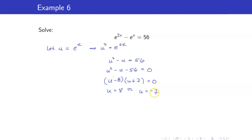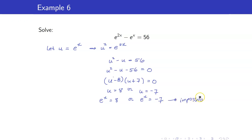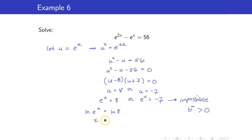Remember that we are solving for x, not u, so do not forget to switch back. We have e to the x equals 8 or e to the x equals negative 7. This second case is impossible because the range of the exponential function is always positive — any number raised to an exponent should always be positive. So we solve only e to the x equals 8: taking ln of both sides, x is equal to ln of 8.